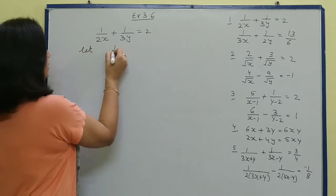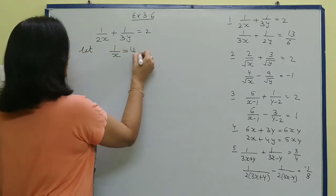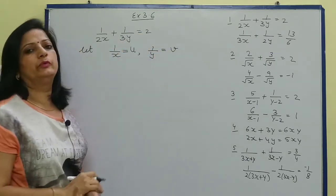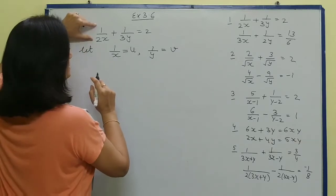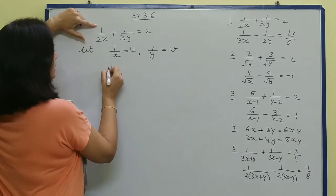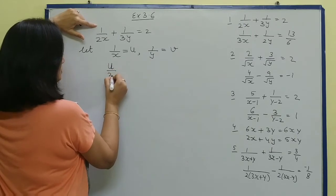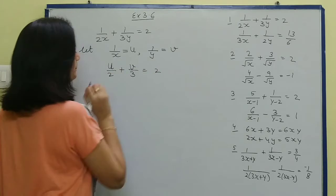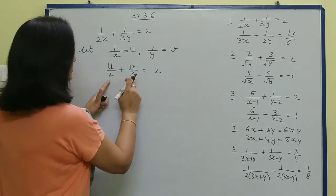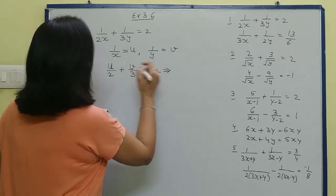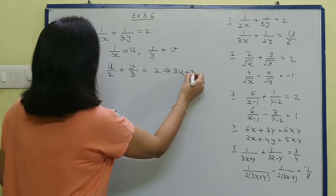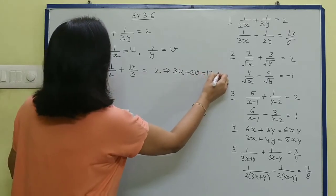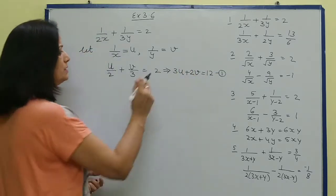We assume: let 1 upon x be new variable u, and 1 upon y be another new variable v. Now the first equation becomes u upon 2 + v upon 3 = 2. Simplifying by taking LCM as 6, the equation becomes 3u - 2v = 12.